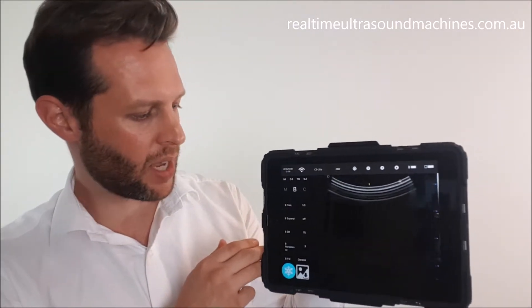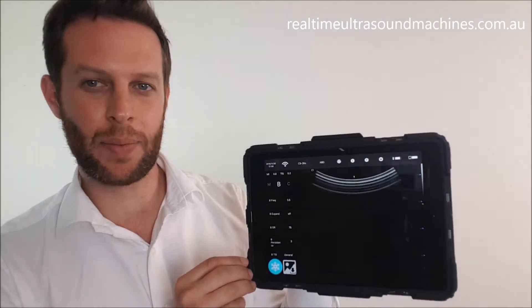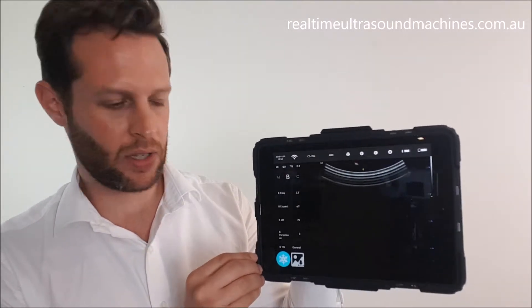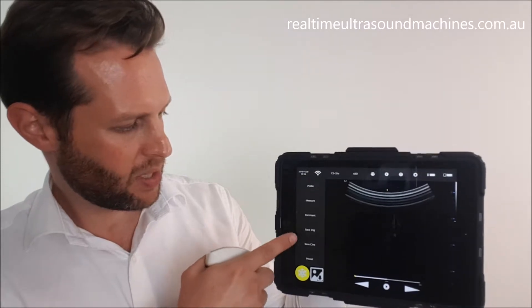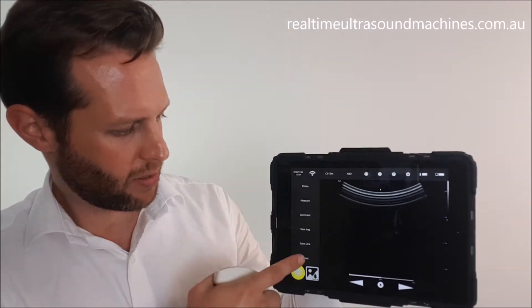The first time you do that, you might get a question from your iPad or iPhone asking if you want to allow this app to save things to your camera roll - just click yes. This little button down at the bottom will allow us to freeze the image. If we tap that, it should bring up a separate set of menus which will let us either save the cine loop or save the image.